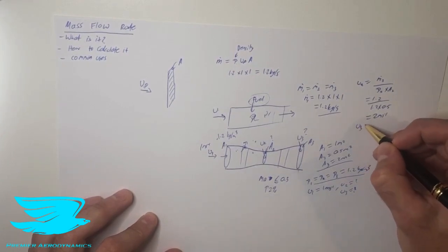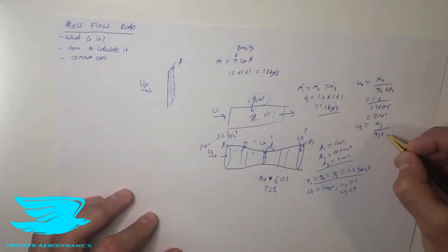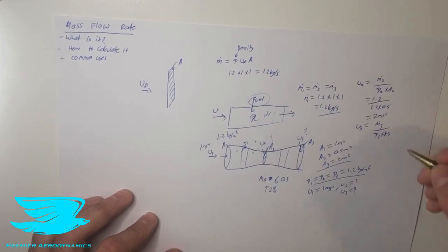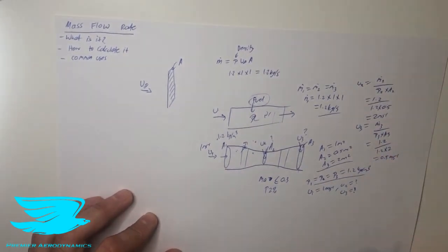If you want to find out u3, it's again m dot 3, the mass flow rate at station 3 divided by the density at station 3 times by the cross-sectional area at station 3. So this is 1.2 divided by 1.2 times 2. So if you do the math, it will come out to be 0.5 meters per second.